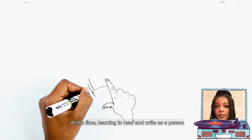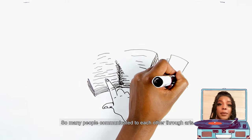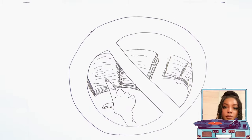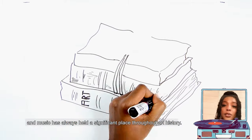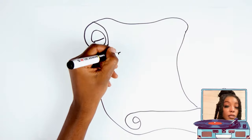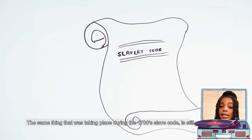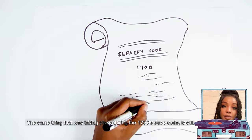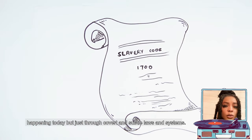At the time, learning to read and write as a person who was enslaved was outlawed, so many people communicated with each other through arts. Just based on that historic information alone, it's no secret that arts and music has always held a significant place throughout our history. You'll see that not much has changed to today. The same thing that was taking place during the 1700s slave code is still happening today, but just through covert and subtle laws and systems.